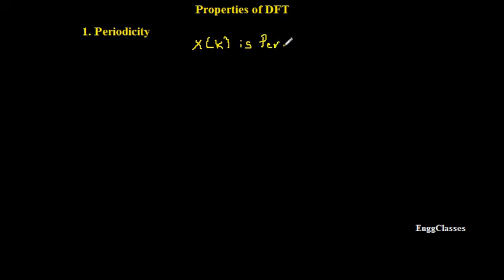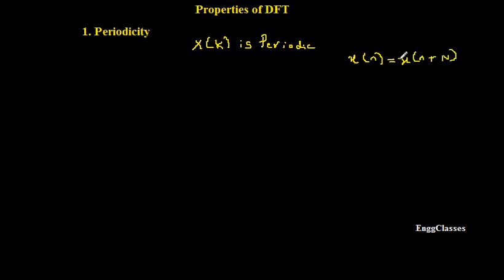X of K is periodic. If I want to prove anything as periodic, the periodicity property says that X of N, if replaced with X of N plus N, and if these two are equal, we would say that the given signal is periodic. To prove that, I will consider the expression for X of K, which is the DFT of X of N.